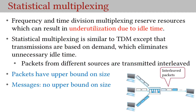Frequency and time division multiplexing reserve resources, which can result in underutilization due to idle time. Remember, in computer networks transmissions are usually separated by long periods of silence. Therefore using FDM or TDM exclusively leads to idle time and hence underutilization of the network. FDM and TDM are therefore used only at a coarser granularity level.